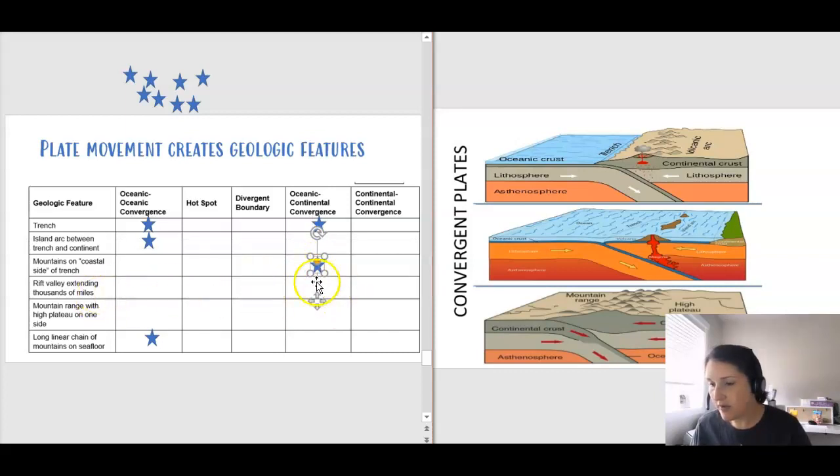Next up, the rift valley. Rift valleys come when we have a separation of plates, so we're not going to mark that. A mountain range with a high plateau on one side, we don't see that in particular. We're going to see that when we look at the next type of meeting, and we don't have a linear chain of mountains on the seafloor. So we're good to go with the oceanic continental convergence.